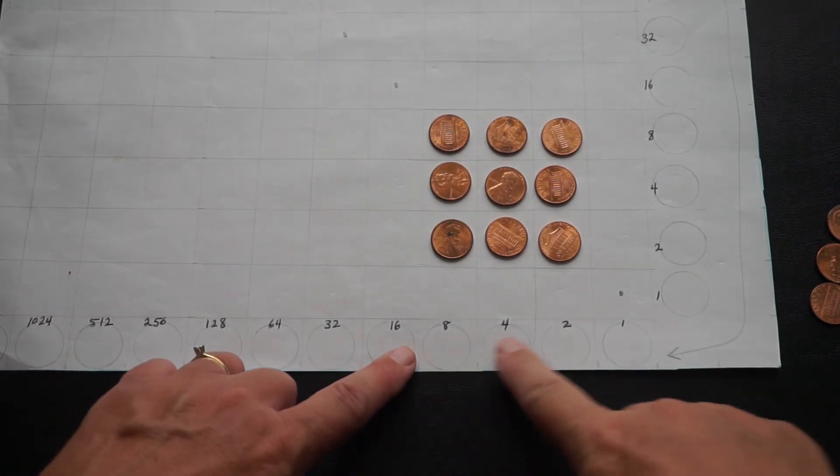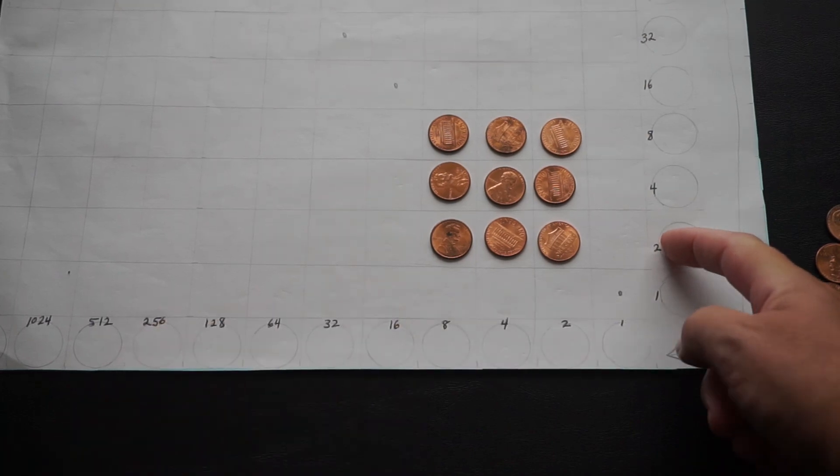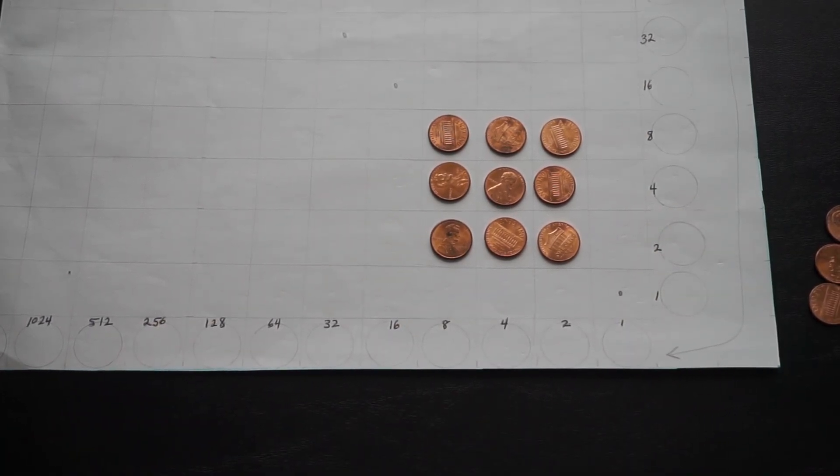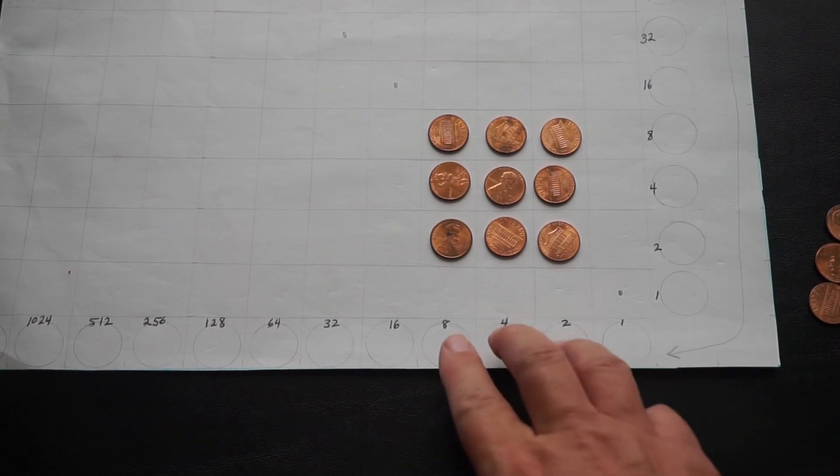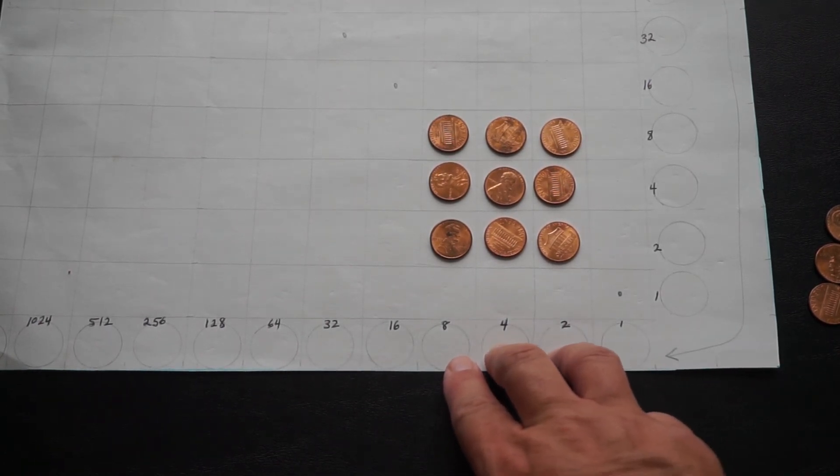We get eight plus four plus two, which is 14. We see on the other side we also have eight plus four plus two. Remember that the number we started with was 196. We wanted to find the square root. The square root of 196 is 14, because that's what these numbers add up to.